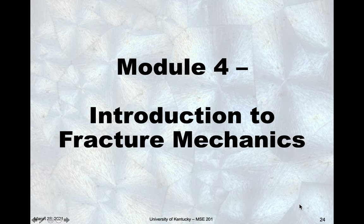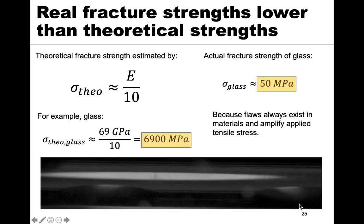In this video we're going to go over an introduction to fracture mechanics, which will give us an idea of why the demo that we just completed happened the way it did. Starting point: if you calculate the fracture strength for a material — what it takes to break all the bonds across its cross-section — you get that the theoretical strength, sigma_theo, should be approximately equal to the elastic modulus E divided by 10.